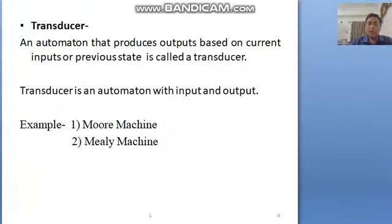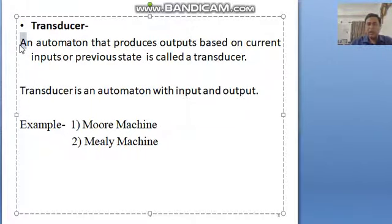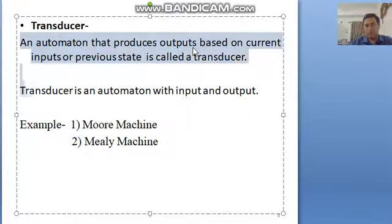The second category I told you is divided into two categories. The second category is transducers. Transducers are that category of automata in which we get some output on giving input. It means an automaton that produces output based on current input and previous state is called a transducer.